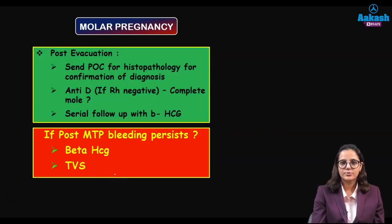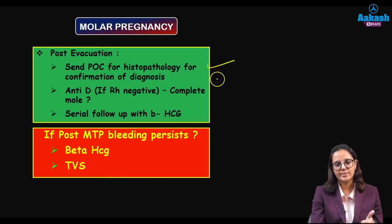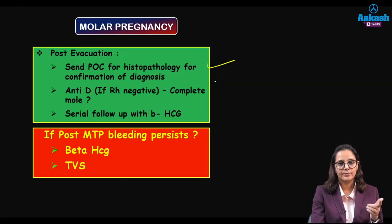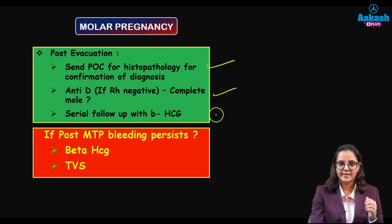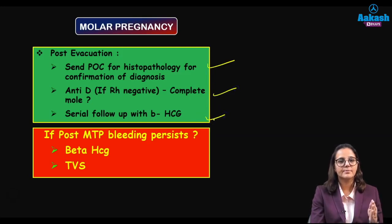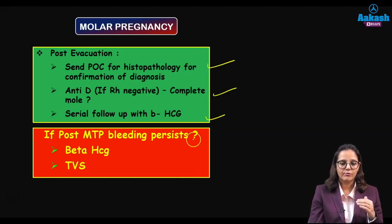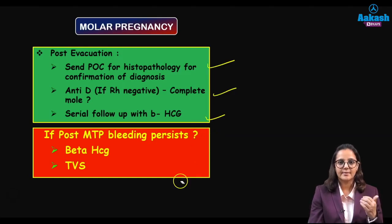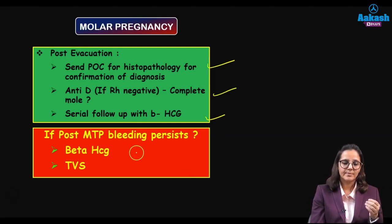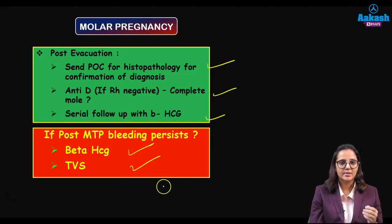After evacuation, send tissue to the lab to confirm whether it is a molar pregnancy, and if so, whether complete or partial, or a neoplasia. If the patient is Rh negative, give anti-D injection. Take a baseline beta-hCG value for follow-up. If the patient has continuous bleeding after evacuation, it may indicate retained products or gestational trophoblastic neoplasia — repeat beta-hCG and do a TVS scan.